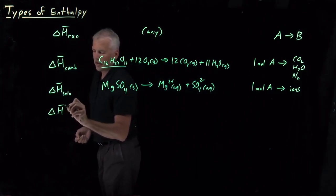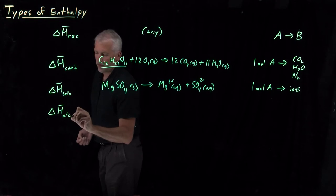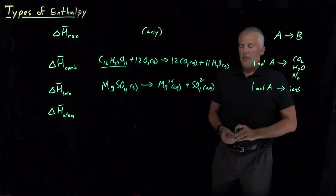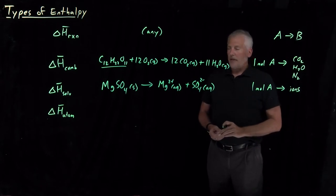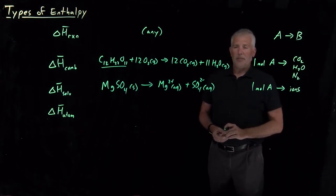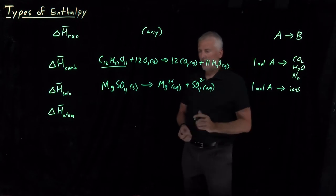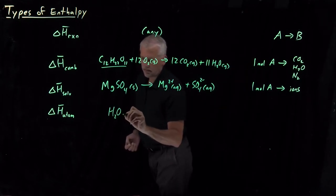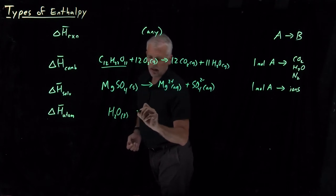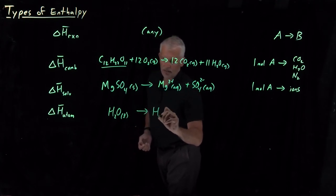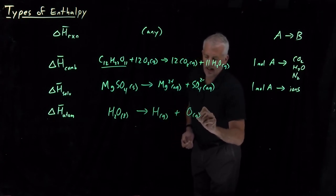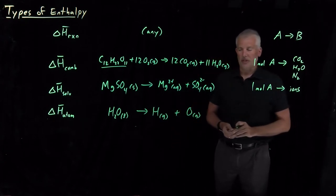One of the most straightforward to understand, although it's not all that commonly used, is a delta H of atomization, an atomization enthalpy. An example would be if I took a water molecule and I decompose it into atoms, so gaseous hydrogen and oxygen atoms.